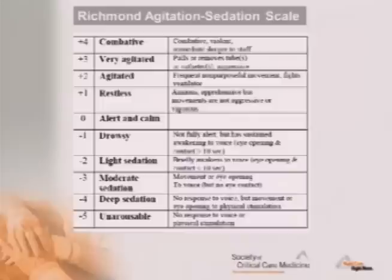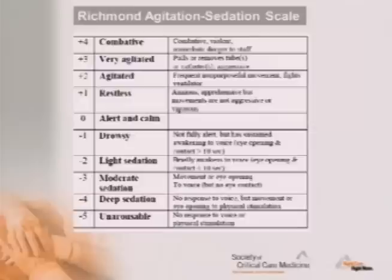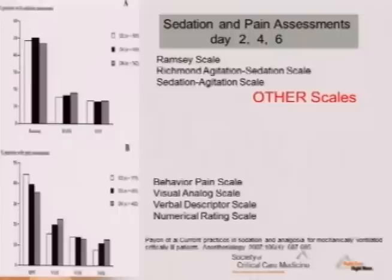How do we measure sedation? There are several instruments. The Richmond Agitation Sedation Scale — the RASS — has a plus/minus structure with zero being calm and alert. Positive numbers represent restlessness and combativeness; negative numbers represent drowsiness or minimal eye opening. Scales are a way of communicating clearly between providers. Both the RASS and the Sedation-Agitation Scale are used, along with a variety of pain scales.